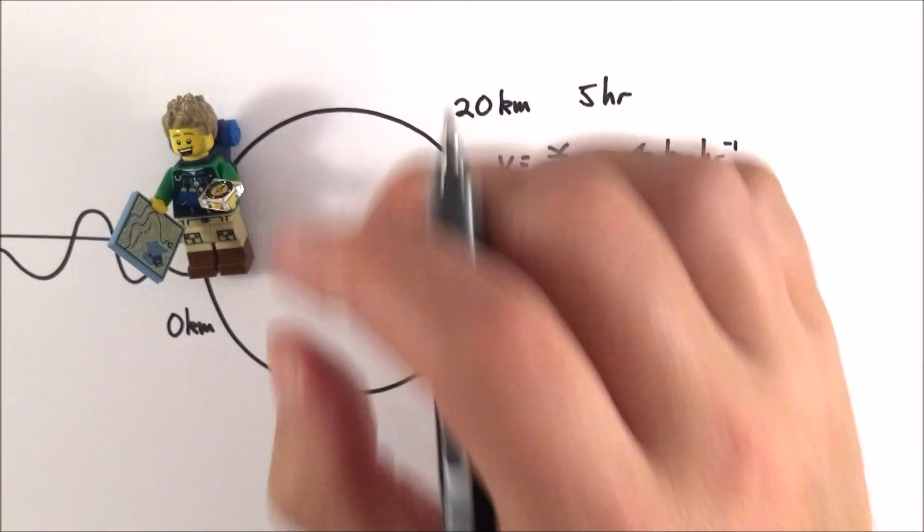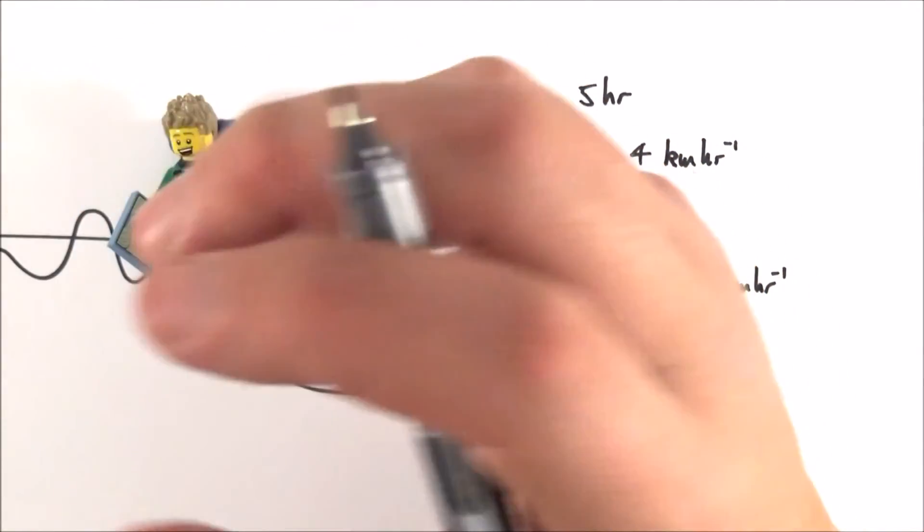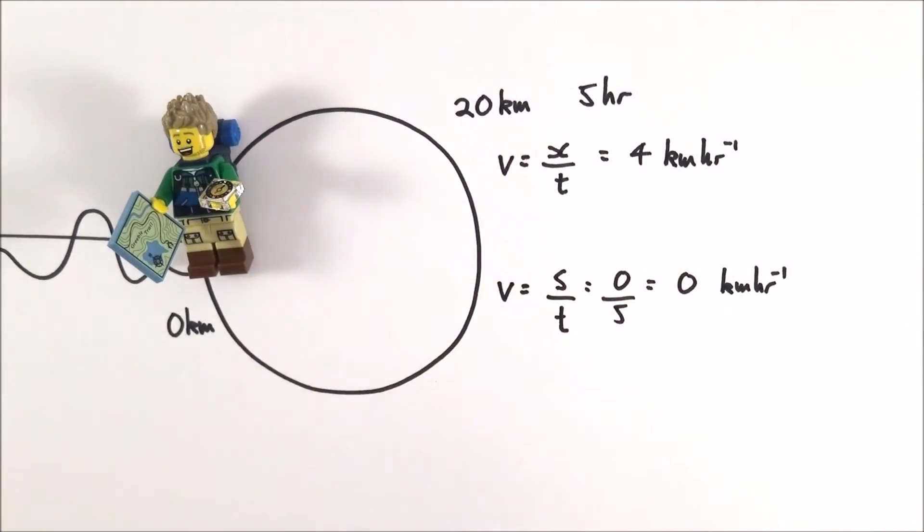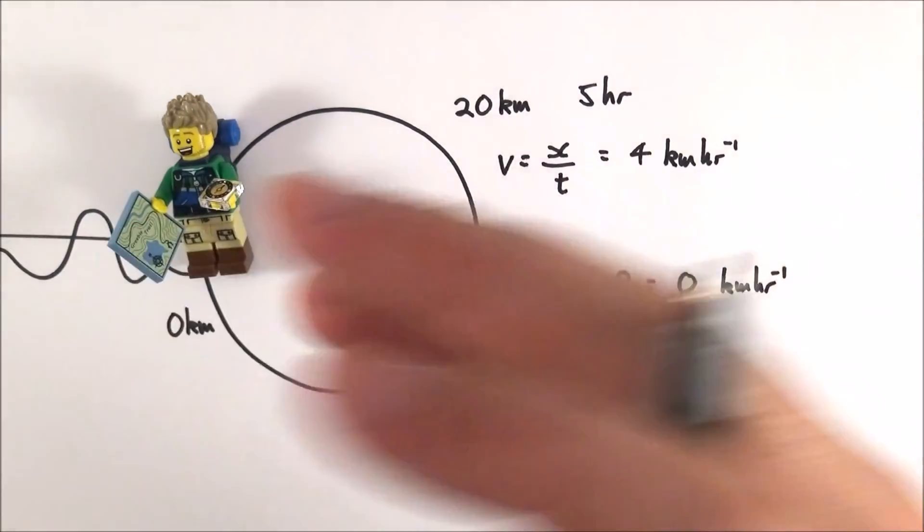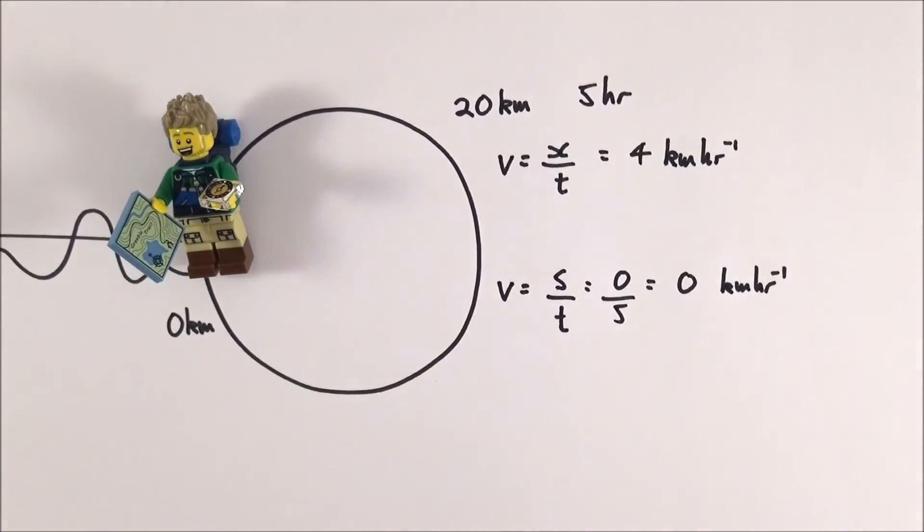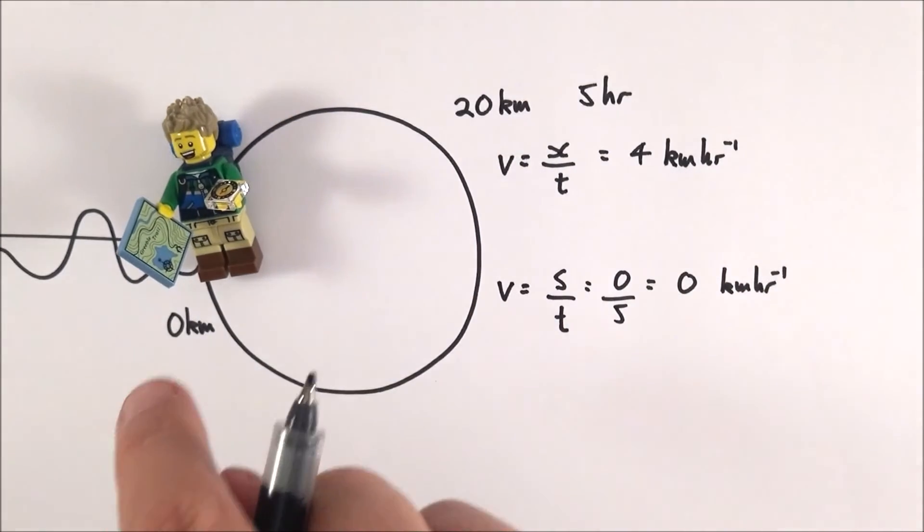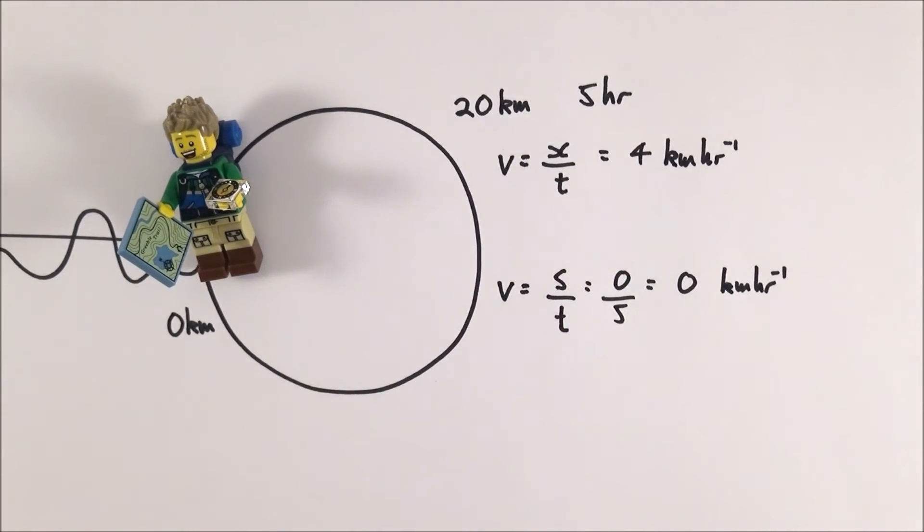And in fact it's the same for yourself - provided you go to bed in the same bed that you woke up in, your total displacement over the whole of today, whether you go to school or do sport or whatever it might be, your average velocity on a day-to-day basis is normally about zero meters per second because you end up where you started, your displacement is zero and therefore your average velocity is zero.